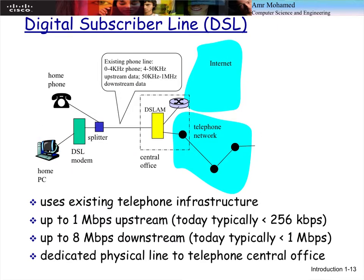The first access method we'll discuss is called Digital Subscriber Line (DSL), sometimes called ADSL — Asymmetric Digital Subscriber Line. It's obsolete now; about 15 years ago we used it. The main idea of DSL is that service providers wanted to give people access to the internet through infrastructure that was already there to minimize cost, rather than building specific new infrastructure.